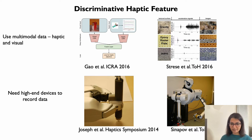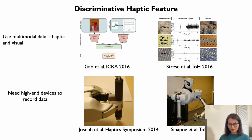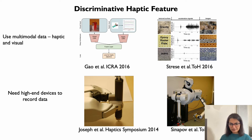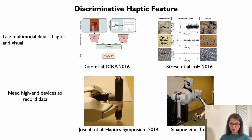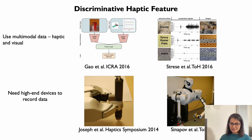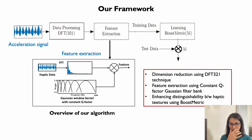In this work, we propose a set of novel discriminative features called CQFB for surface material classification. Additionally, we demonstrate the effectiveness of a metric-based feature transformation technique in enhancing the distinguishability of haptic signals. Our framework needs single modality acceleration data as an input and generalizes well for different predictors.